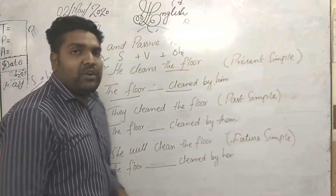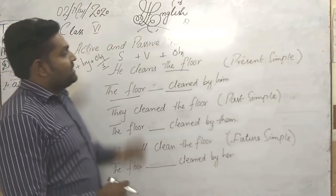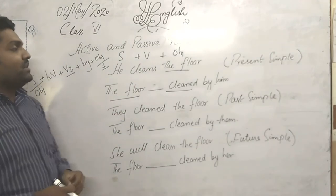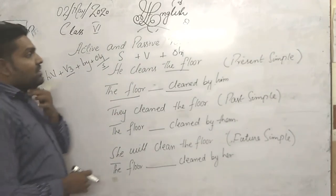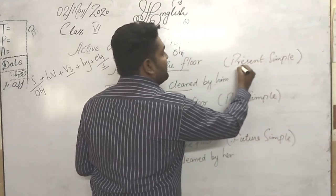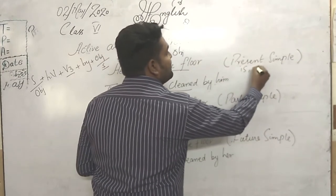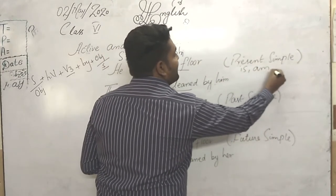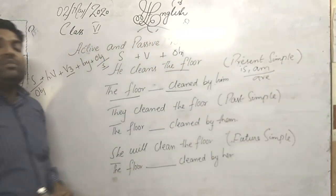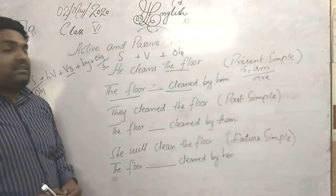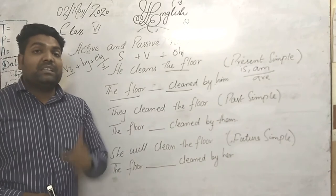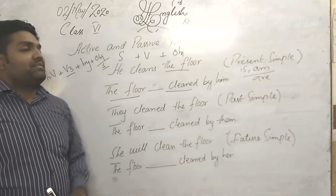Now we are going to look at which helping verb to use in passive voice. For present simple, we use is, am, or are. We do not use do and does as helping verbs in any passive sentence.